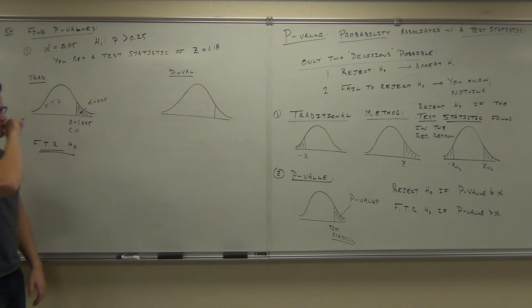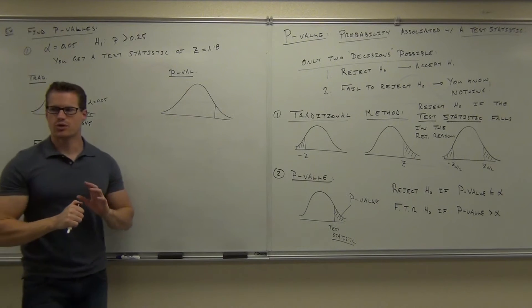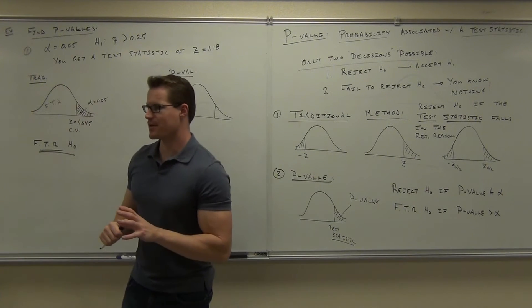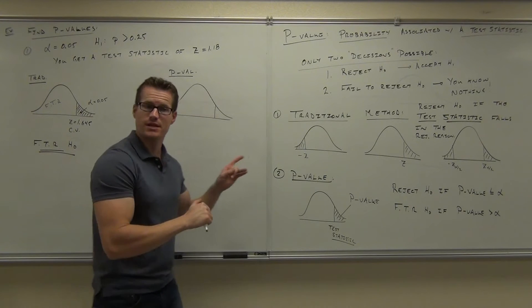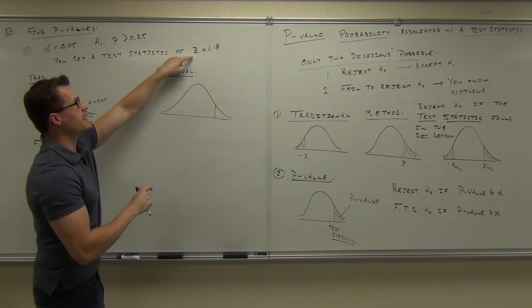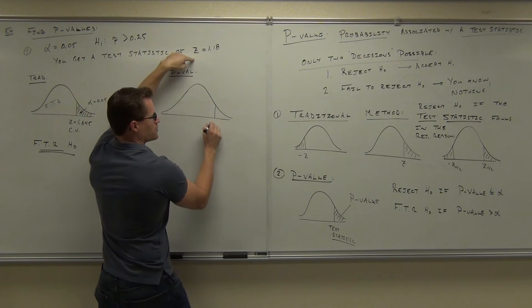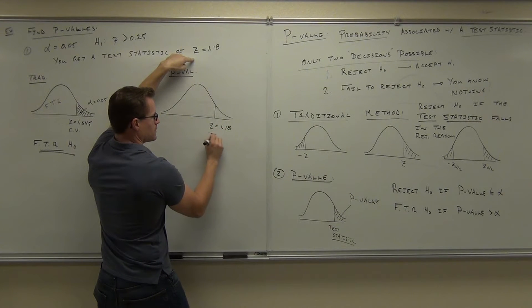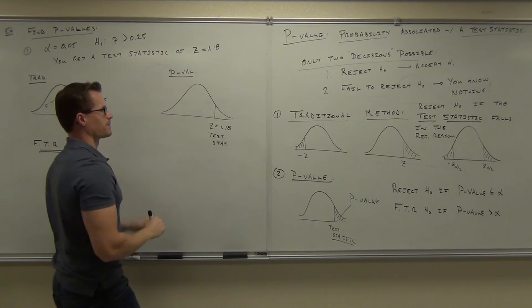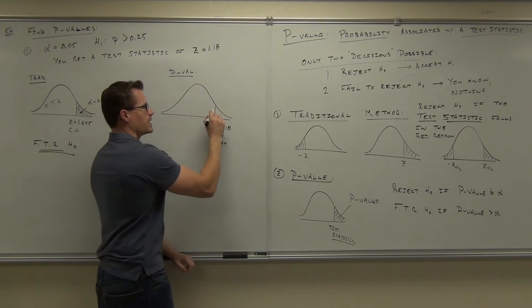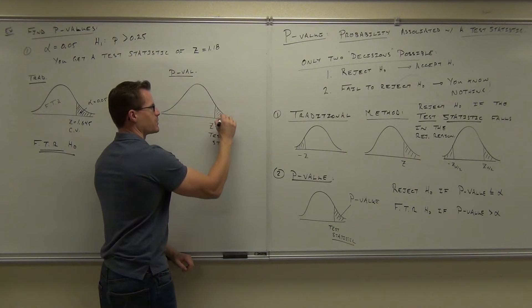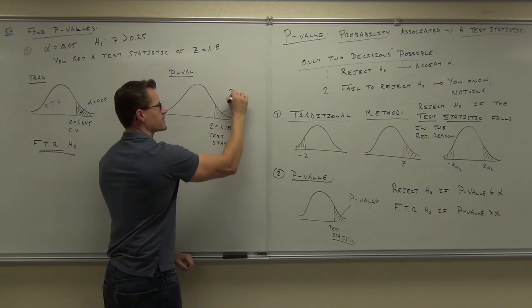Now the p-value method works differently. There's no such thing as a critical value when you're dealing with the p-value method. What the p-value method does is this. It says you take your test statistic and that's what you put right here. And you find the area that's associated with that. That's known as a p-value.